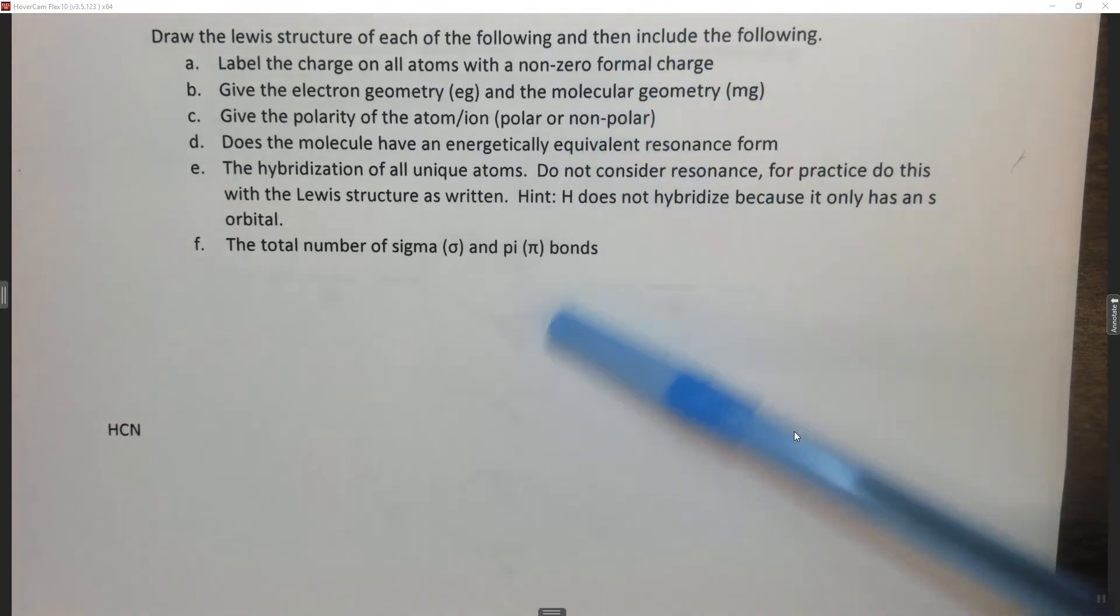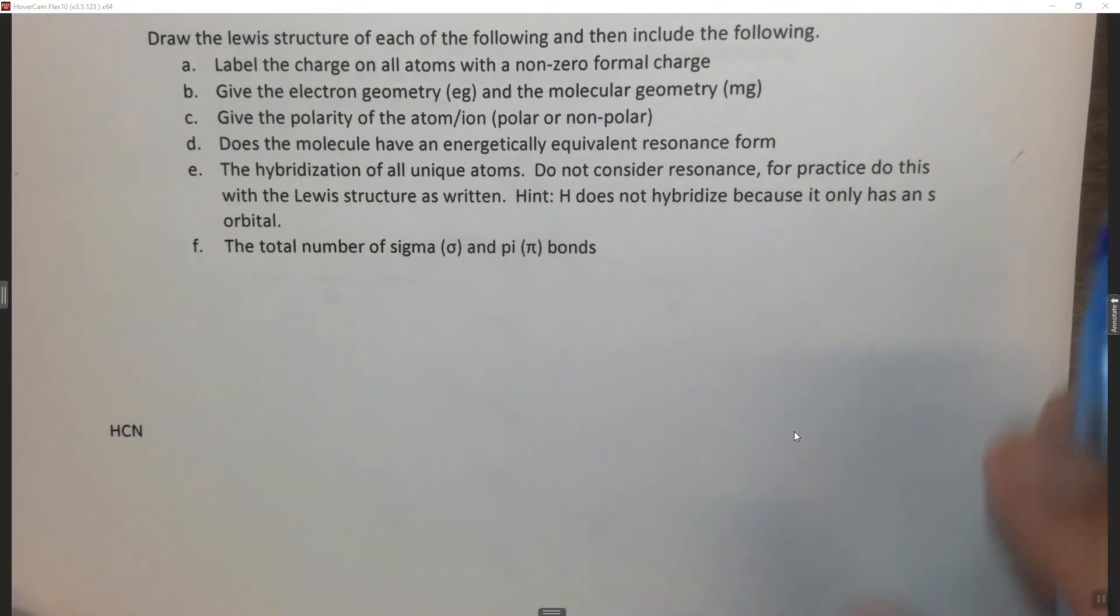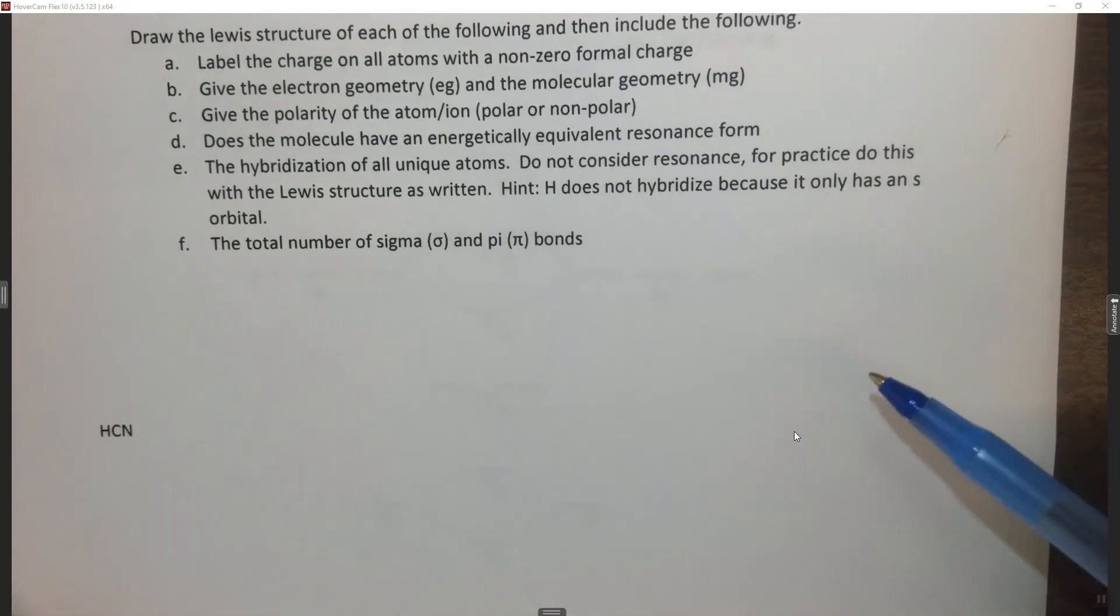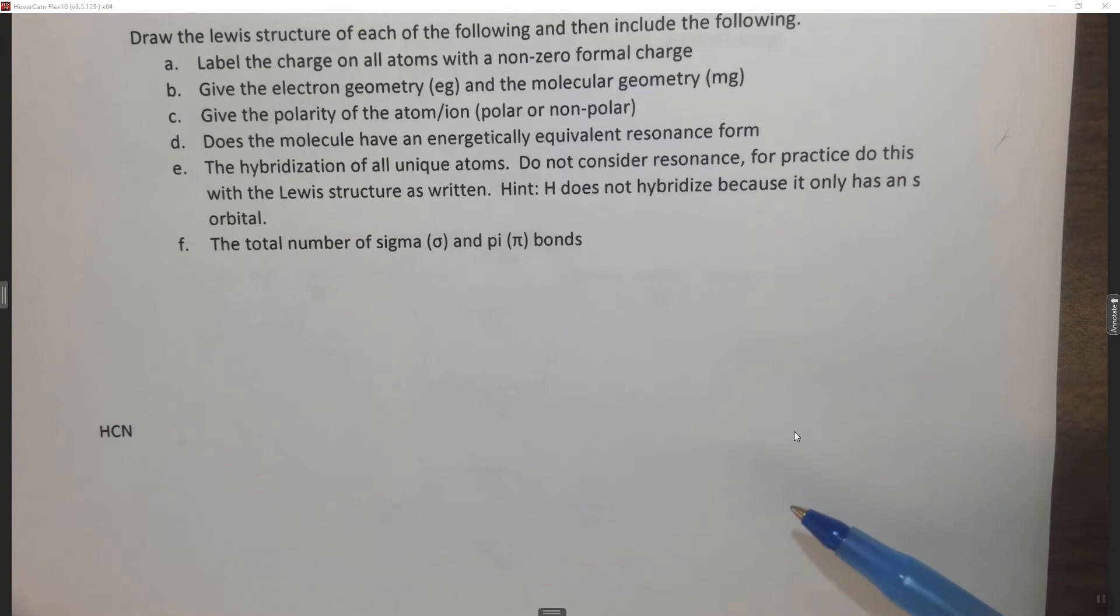I'm not going to go into all the details of how you calculate all of these things, so it's going to be really important to go back and do that. Alright, so let's take a look at HCN. The first thing we need to do is draw the Lewis structure and identify all the atoms with non-zero formal charges.